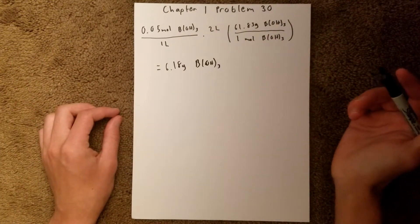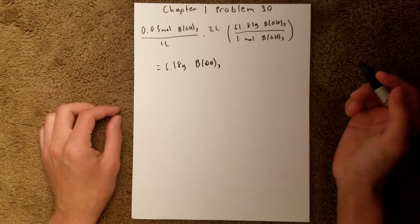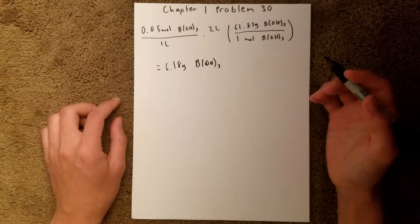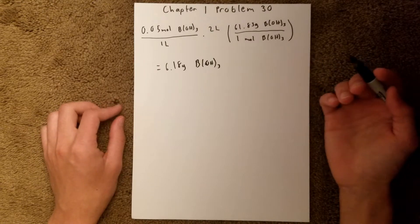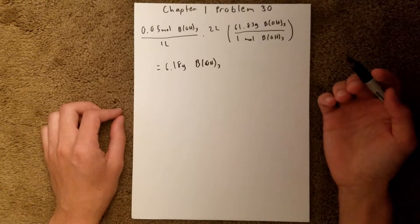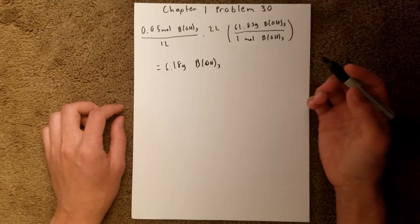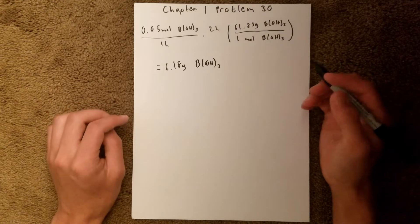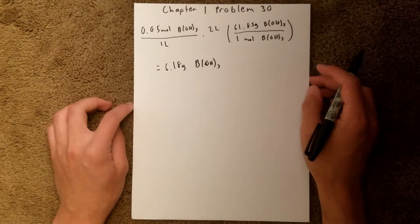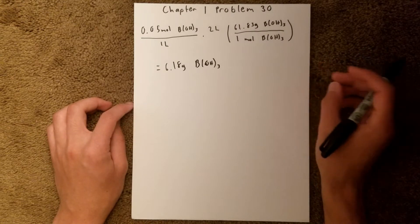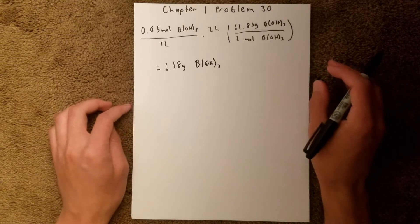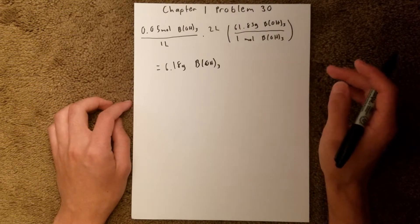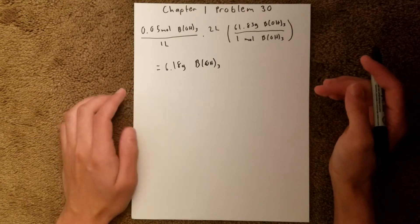And for the second part, it asks us what flask we should prepare this in. And if you do not already know, and maybe if you haven't taken a chem class or you're just starting a chem class, the most accurate flask that you can prepare a solution in is a volumetric flask. It has the lowest tolerance for accuracy, so this solution will be prepared in a volumetric flask.